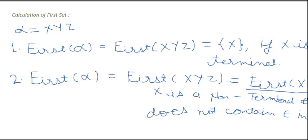Last time we saw three rules for the calculation of First Set. I would like to revise them. The first rule is: First(alpha) is equal to First(xyz), where x is a terminal and yz may be non-terminal or terminal.